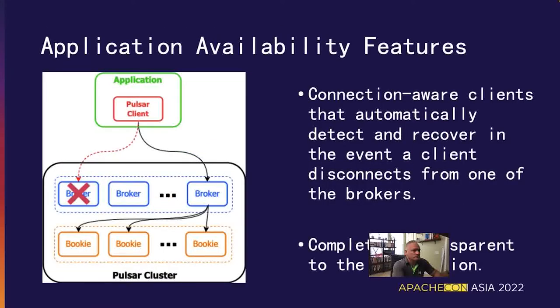At the application level, Pulsar provides connection-aware clients that insulate the application from intermittent network outages. The Pulsar client automatically detects these network issues and reestablishes the connection rather than throwing an exception that, if uncaught, would cause the application to crash. This behavior is completely hidden from the application code and provides resiliency to broker failures at both the cluster and availability zone layer.